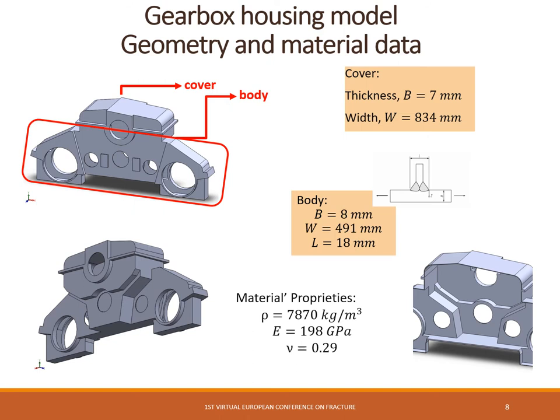The gear housing box is presented and we can identify two parts: the cover and the body. We can observe two views — the front and the opposite side — as well as the internal details of the geometry. As can be concluded, the geometry is very complex. In the cover we have seven millimeters of thickness and in the body we have eight millimeters of thickness. The material properties are of steel and in the body there are some zones that are welded.